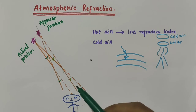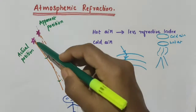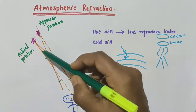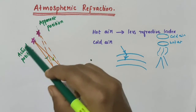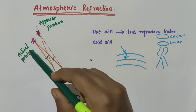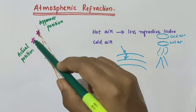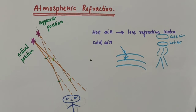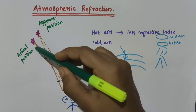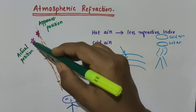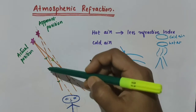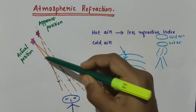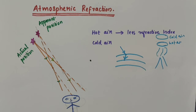On entering the earth's atmosphere, the starlight — consider this orange one as the starlight, the light coming from that star. This is the actual position of the star. The rays of light coming from the star, on entering the earth's atmosphere, the starlight undergoes refraction continuously before it reaches the earth.